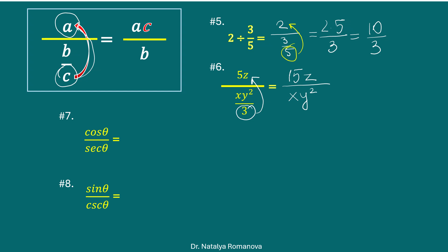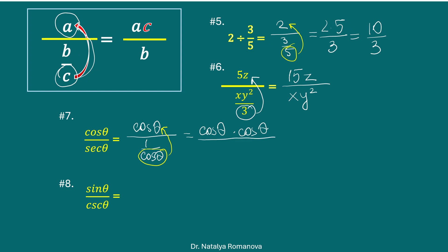We can use this trick for trigonometry too. For example, cosine divided by secant. We can write cosine theta divided by 1 over cosine theta. Secant is 1 over cosine theta, so cosine theta goes to the numerator. We have cosine theta times cosine theta divided by 1. We can simplify: it is cosine squared theta.